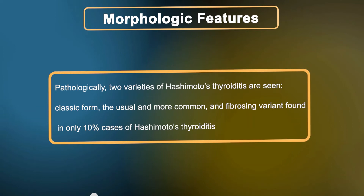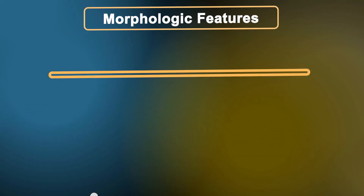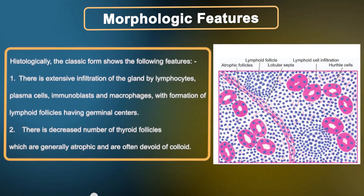Pathologically, two varieties of Hashimoto's thyroiditis are seen: the classic form, which is the usual and more common variety, and the fibrosing variant, found in only 10 percent of cases. Histologically, the classic form shows extensive infiltration of the gland by lymphocytes, plasma cells, immunoblasts, and macrophages, with formation of lymphoid follicles having germinal centers.